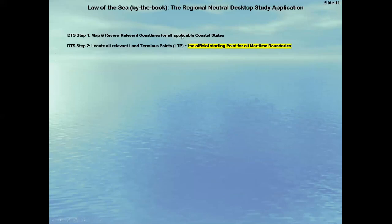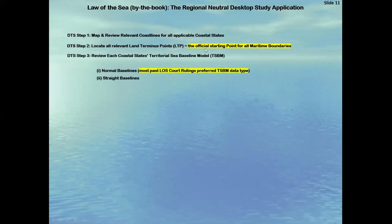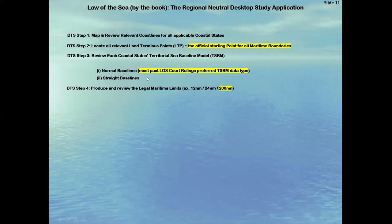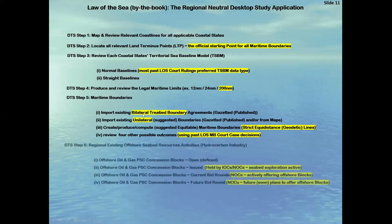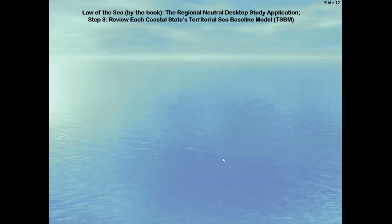Law of the Sea by the Book — this is how Peter and I address all of these global studies. Step one: desktop study — map and review the relevant coastlines for the states. Step two: locate the land terminus point, which is the official starting point for all maritime boundaries. Step three: review each coastal state's territorial sea baseline model, that is normal and/or straight baselines. The courts really do prefer normal baselines. Step four: produce and review the legal limits — we're only looking at the 200 mile for the study. Step five — the critical one: maritime boundaries. We're going to import the bilateral treaty, both countries' unilateral lines, offer the strict equidistance line, and then give a bunch of scenarios from past court judgments. Then we'll review the hydrocarbon situation.